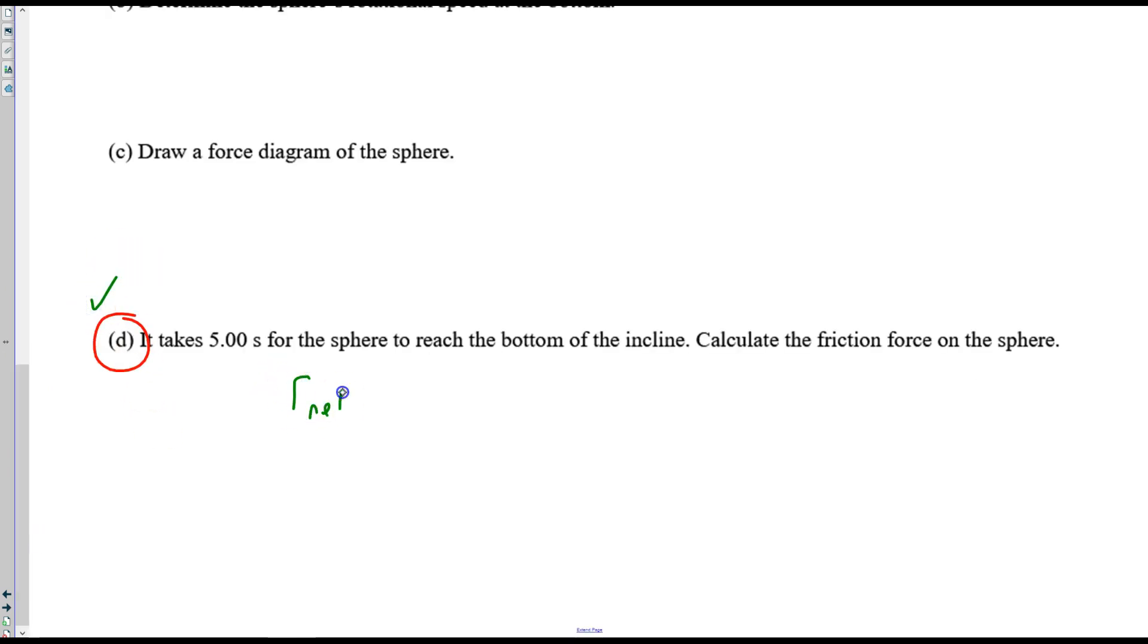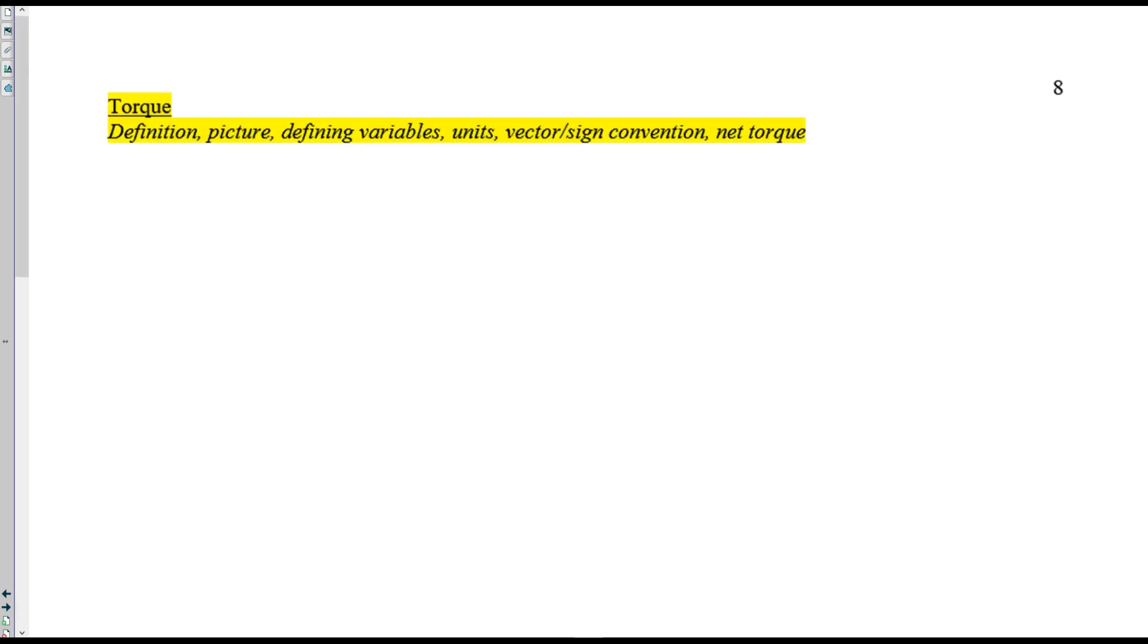Aha! The net torque, remember, is I times alpha. And the net torque also, let's do it like this, is equal to the friction force, static friction, times the radius, times the sine of 90. And don't forget that alpha is the change in speed over change in time. So, using these equations, we can solve for the friction force on the sphere. Because we know this, we can find this, and we know this.